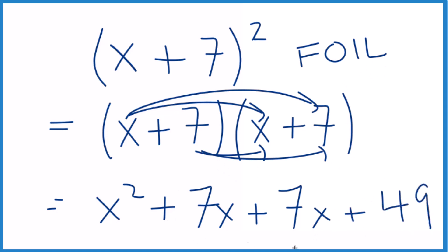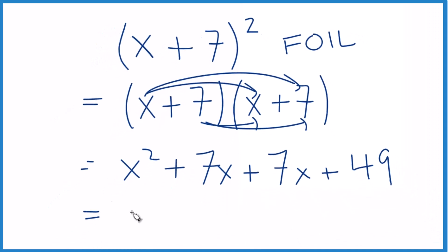So now we can add this together to simplify the sum. We have x squared and then 7x plus 7x, that's 14x.